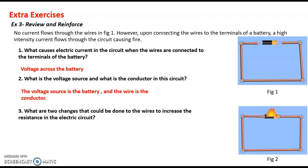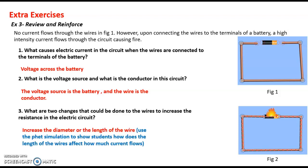What are two changes that could be done to the wires to increase the resistance in the electric circuit? We can either increase the diameter or the length of the wire. We can choose a wider wire to connect the terminals of the battery, or add more wire to make the pathway of the current longer, so that the resistance increases.